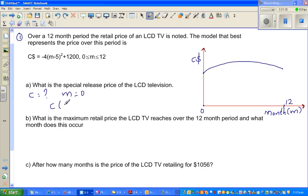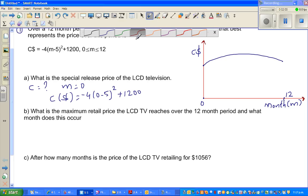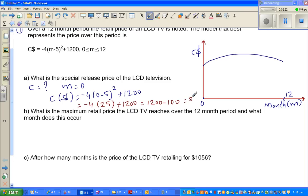They're asking us what is C when m is zero. So C in dollars would be minus 4 times 0 minus 5 squared plus 1200. This is minus 4 times 25 plus 1200, which is minus 100 plus 1200, which equals 1,100. So the release price is 1,100.